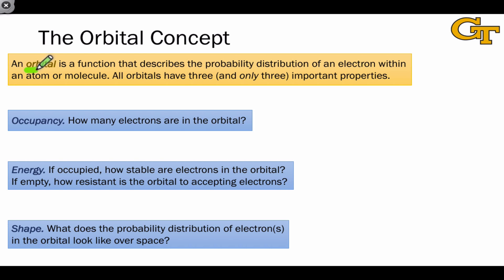An orbital is just a function over space that describes the probability distribution of an electron. What this means is an orbital tells us where an electron is likely to be according to the rules of quantum mechanics. If you've been intimidated by orbitals in the past, I have good news. There are three and only three important properties that all orbitals have. This is the best way to think about orbitals, in terms of these three properties that answer the questions shown on this slide.